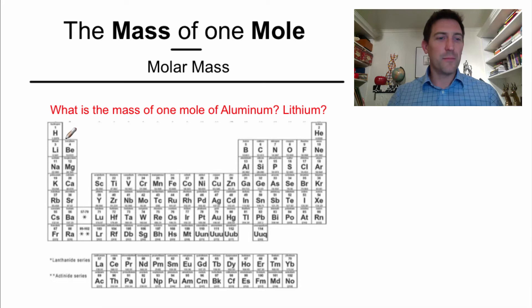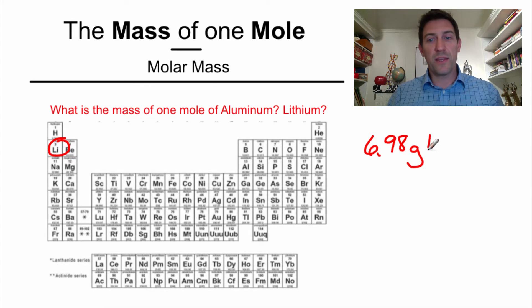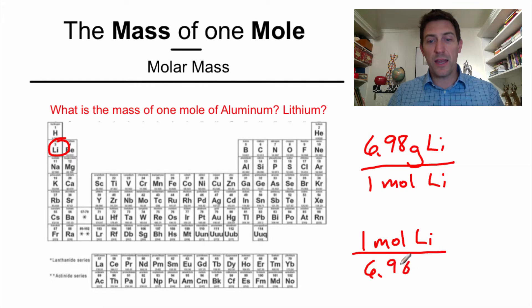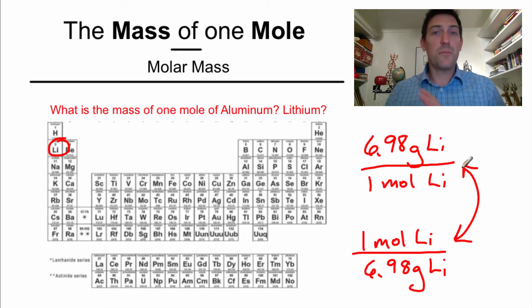Let's take a look at lithium. Lithium is over here, it's number three. And the mass of lithium is 6.98. Those are atomic mass units, but the nice thing about molar mass is we can just put grams of lithium and say that that is one mole of lithium. And just like we did with aluminum before, we can also say that one mole of lithium is equivalent to 6.98 grams of lithium. So these, again, are interchangeable when it comes to dimensional analysis. And this is the molar mass.